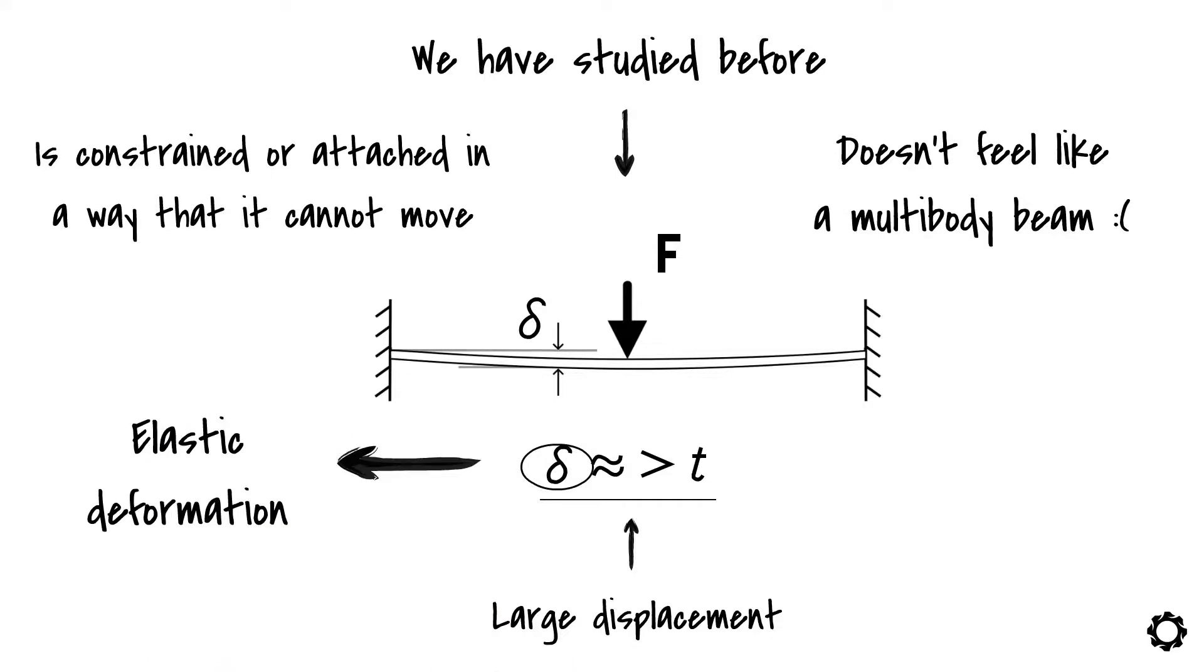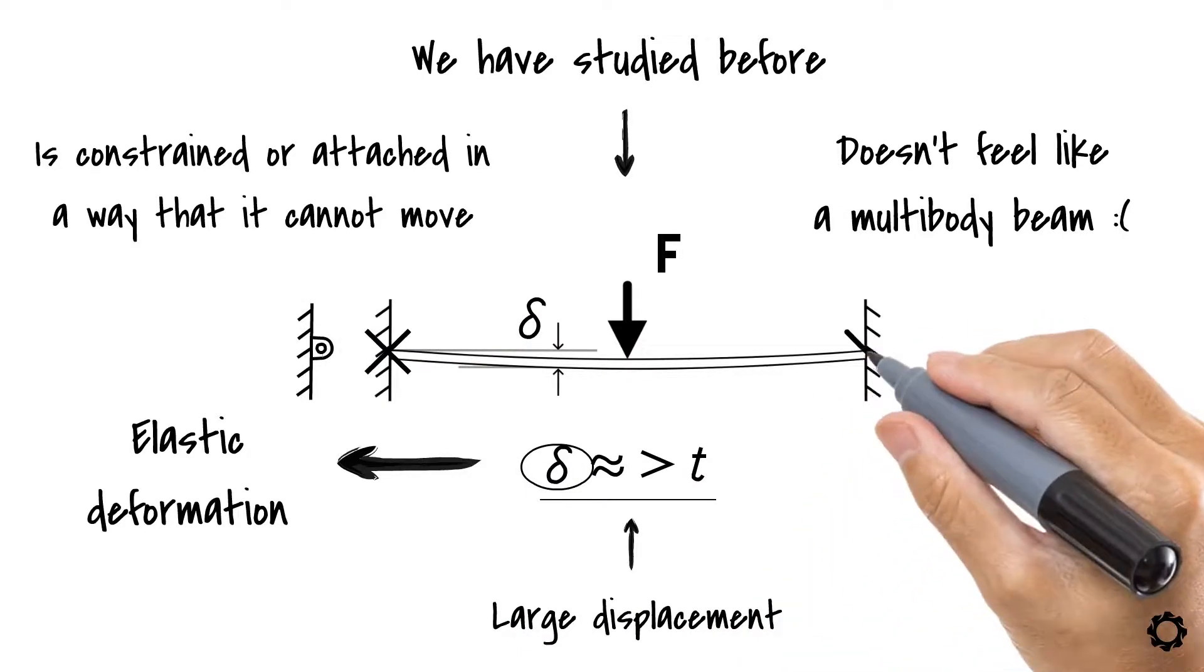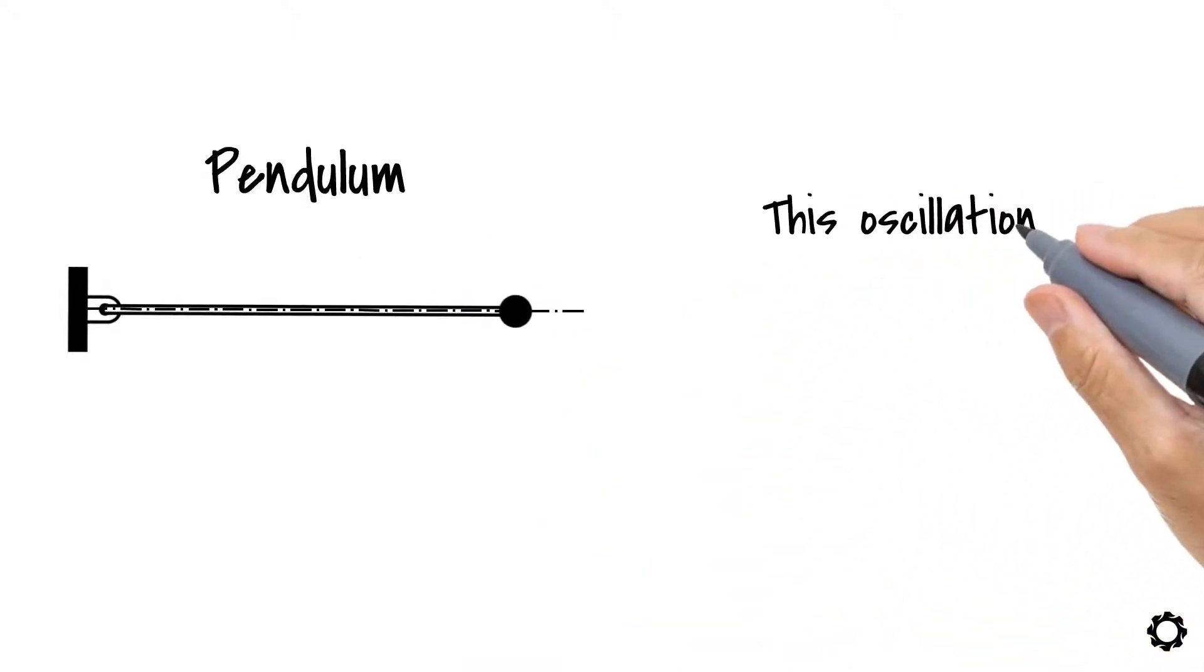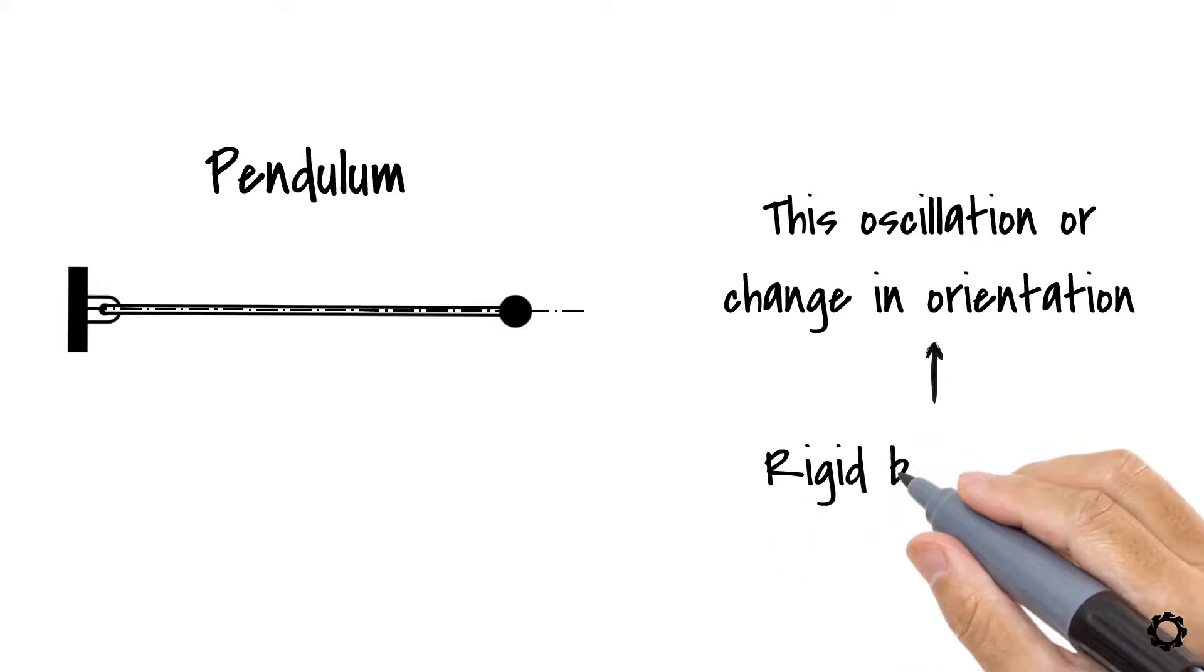Imagine now that we modify our beam and the left support is transformed into a hinged joint and the right support is eliminated. We end up with a pendulum. In this case, under the action of gravity, the beam will oscillate around a rest position. This oscillation or change in orientation of the pendulum is what we call a rigid body motion.